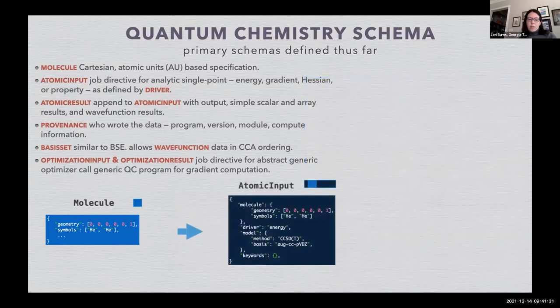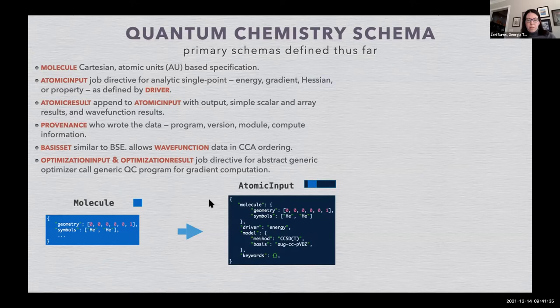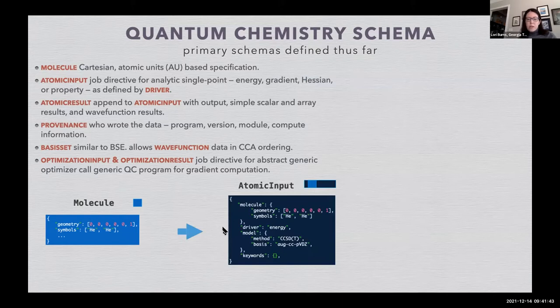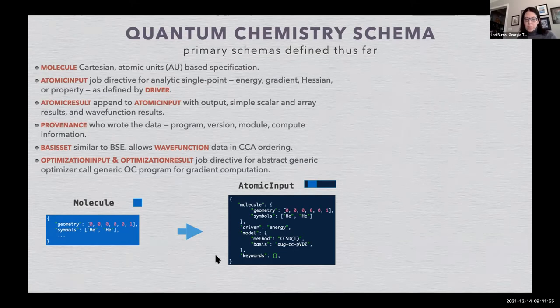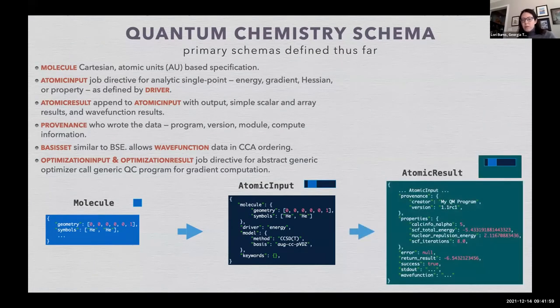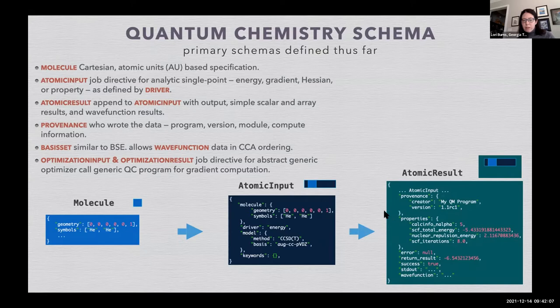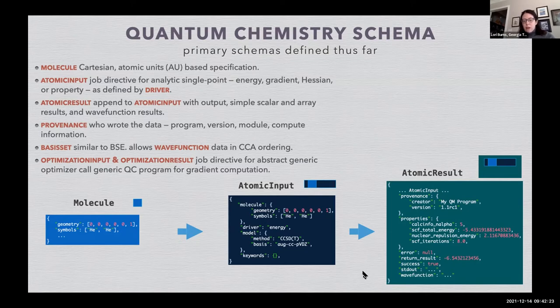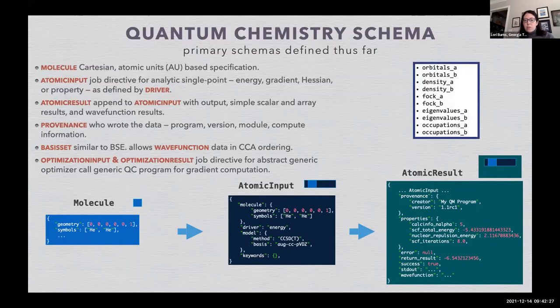The molecule becomes a part of the atomic input, which is the input for a quantum chemistry calculation. So there's the molecule, there's the driver—energy, gradient, hessian—the properties, there's the model to be run, that is usually a method and a basis set, and then any keywords that you want to pass to the QC program. An atomic input then gets run and a quantum chemistry program produces an atomic result. So that includes the input. It also has provenance information about who ran it, the results, the properties, any that were collected along the way, the intended results, so an energy or a gradient, the full standard output of the quantum chemistry program that you're used to seeing, and for some programs some wavefunction information—things like orbitals and eigenvalues and occupations.